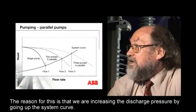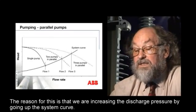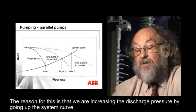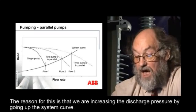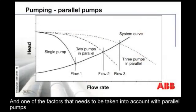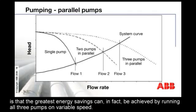Equally, the flow from three pumps in this case is less than the effect of three single pumps. The reason for this is that we're increasing the discharge pressure — they're going up the system curve. One of the factors that needs to be taken into account with parallel pumps is that the greatest energy savings can in fact be achieved by running all three pumps on variable speed.